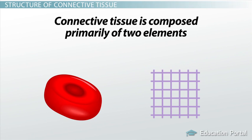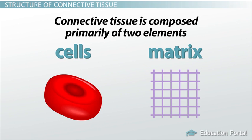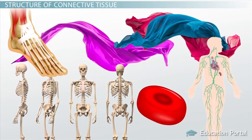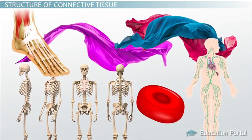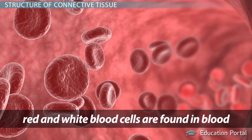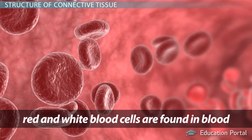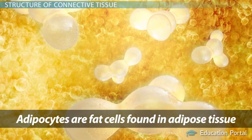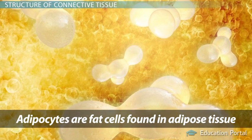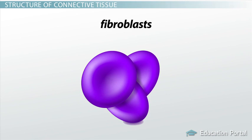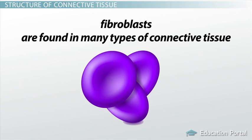Connective tissue is composed primarily of two elements: cells and a matrix. The types of cells found in connective tissue vary depending on the type of tissue they support. For example, red and white blood cells are found in blood, which is a fluid connective tissue. Adipocytes are fat cells found in adipose tissue, or fat. And fibroblasts are cells found in large quantities in many different types of connective tissues.